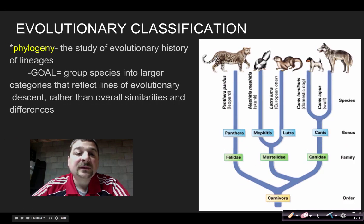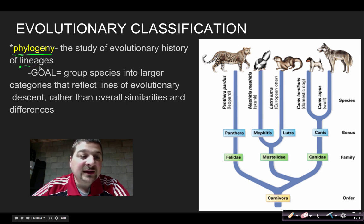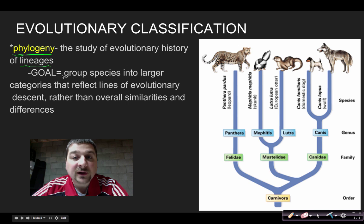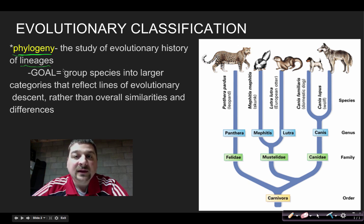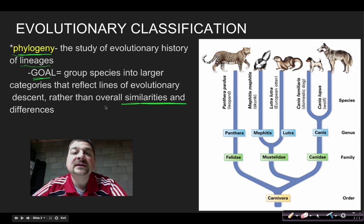In evolutionary classification, we're talking about phylogeny. Phylogeny is the study of evolutionary history of lineage. Your lineage is sort of your ancestry, your heritage — going back through the generations. If we trace organisms and species back through history, the goal of evolutionary classification is to group species into larger and larger categories that reflect evolutionary descent, rather than looking at just physical, structural things that we see on the outside.